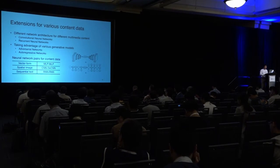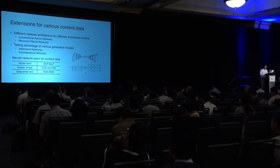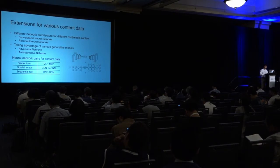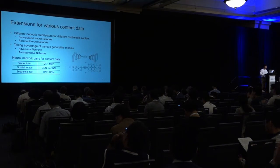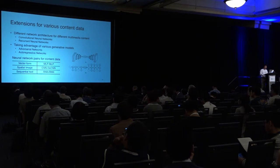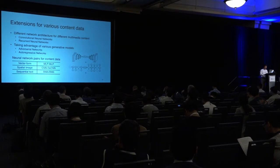There are also trivial extensions for various content data, because we make no assumptions on how the data and network should be. We can use different network architectures for different multimedia content. For example, if the data is in vector form, we can use an MLP pair. For spatial images, we can use a convolutional/deconvolutional neural network pair. For sequential data, we can use a recurrent neural network pair. We can also take advantage of more powerful deep networks such as adversarial networks or autoregressive networks.